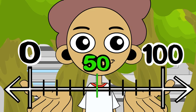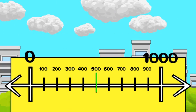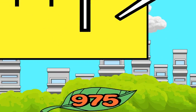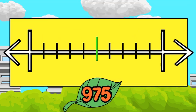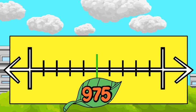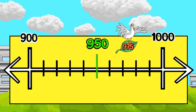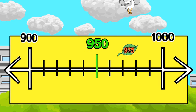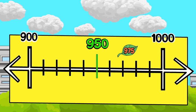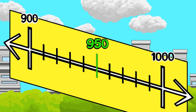And sometimes the nearest hundred is one thousand. Look at 975. The benchmarks are 900 and 1,000. The midpoint is 950. Since 975 is greater than 950, to the nearest hundred, 975 rounds up to 1,000.